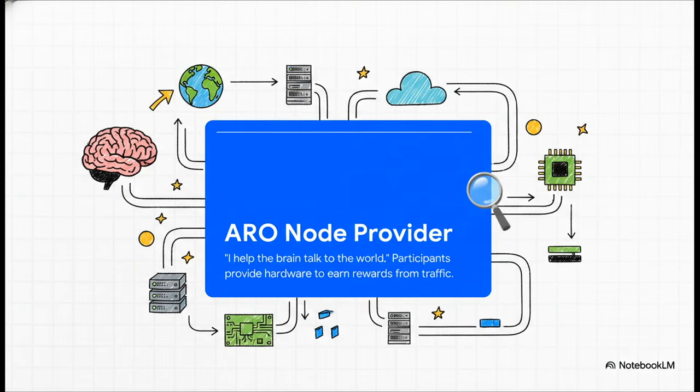Then you've got the second role, the ARO node provider. Their whole motto is, I help the brain talk to the world. See, instead of running the brain itself, they provide the hardware, the on-ramps, the roads we were just talking about. And for doing that, they earn rewards from all the network traffic they help bring in.